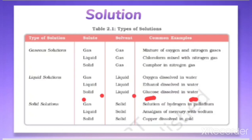In solid solutions, the larger component — the solvent — is solid. Gas dissolved in solid: for example, hydrogen dissolved in palladium. Liquid in solid: for example, amalgam of mercury with sodium. Solid in solid: for example, copper dissolved in gold. These are examples of solid solutions.